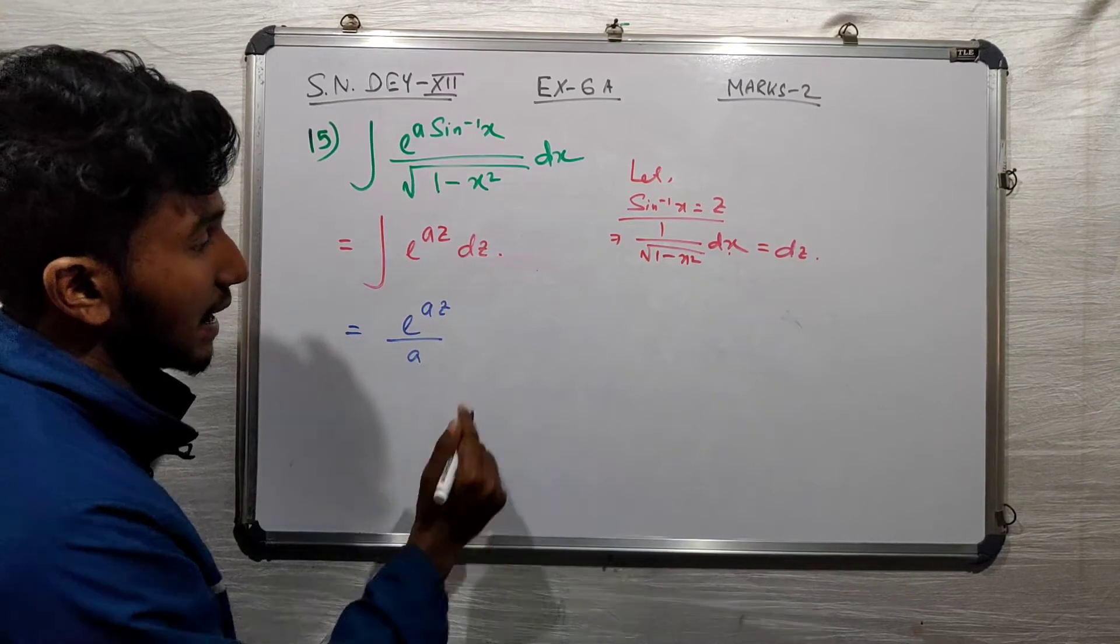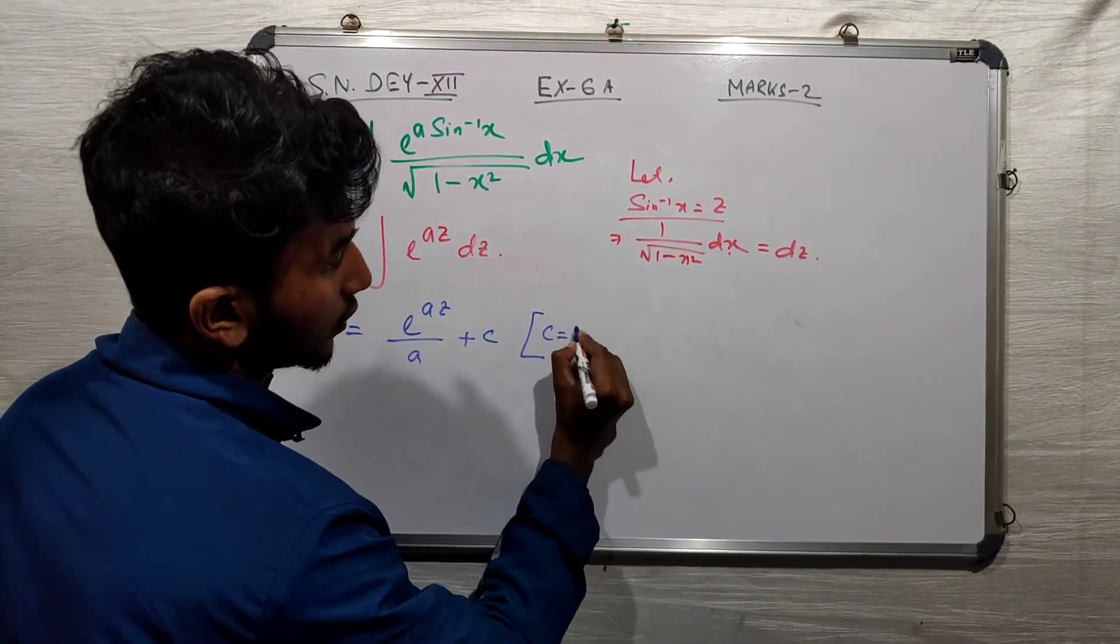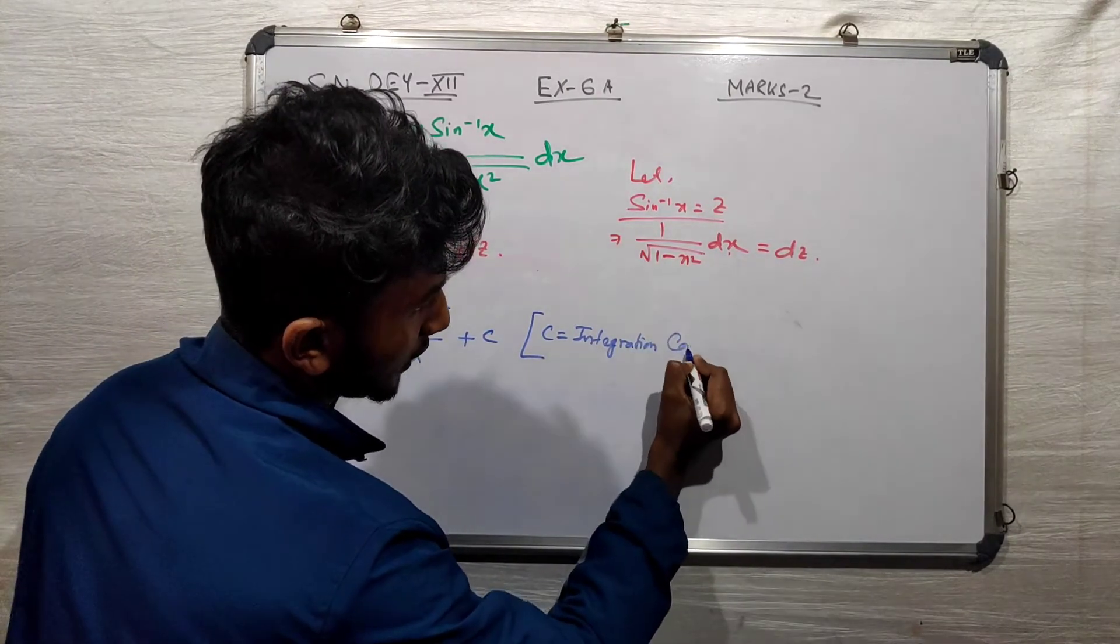The answer is e to the power a z plus c, where c is the integration constant.